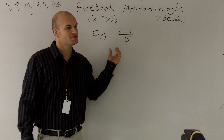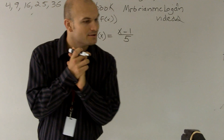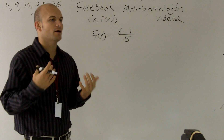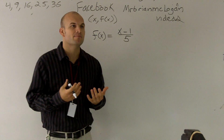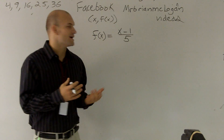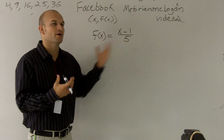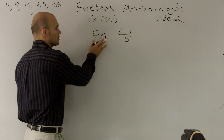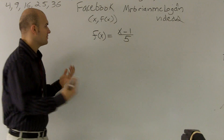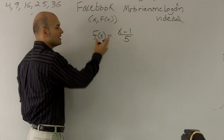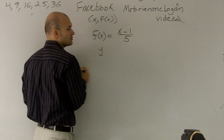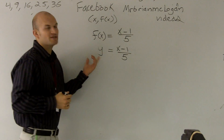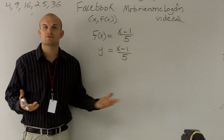For this problem, what it's asking us to do is find the inverse. A couple things you need to remember about the inverse: what we're doing is our input and our output are actually being switched. So the first thing we want to do is change our f of x into a y, because f of x is your output value, and we always refer to y as our output as well. The first step is to change it back to y because it makes our algebra a little bit easier.